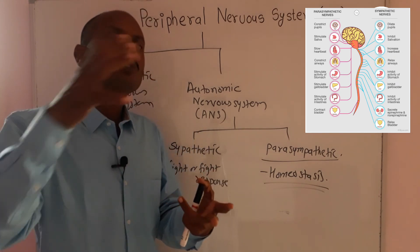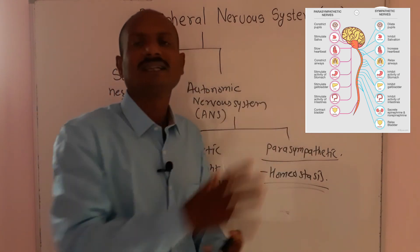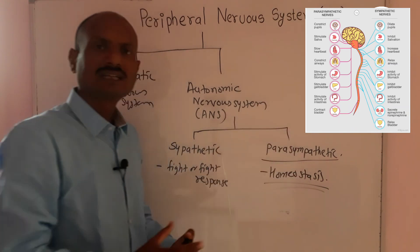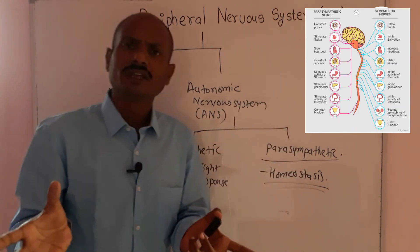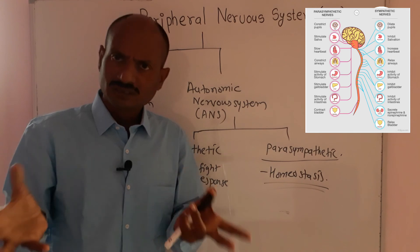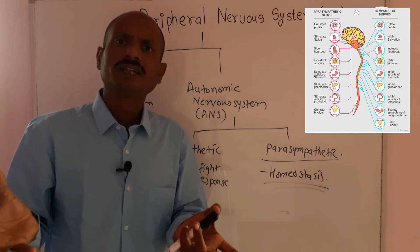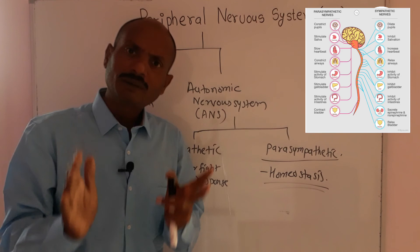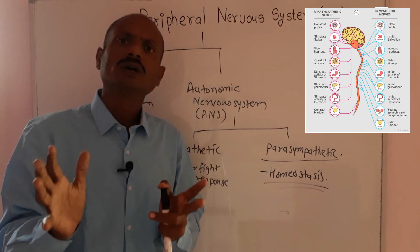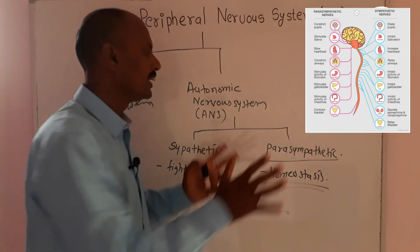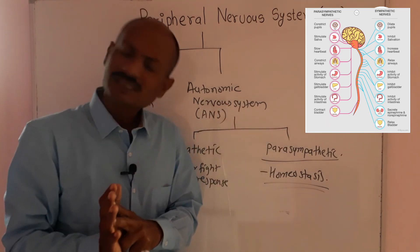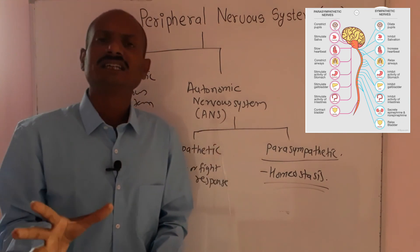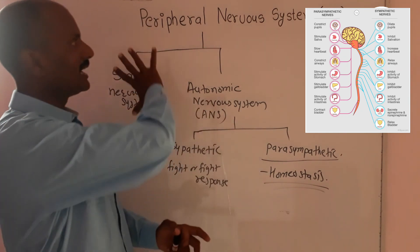Normalizing all these conditions is the job of the parasympathetic nervous system. It ensures the involuntary organs of our body perform their functions normally. The sympathetic nervous system only works during critical conditions.